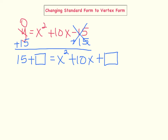We create the perfect square by taking the b value, which in this case is 10, and dividing it by 2. 10 divided by 2 is 5. So now we will square 5, and our perfect square will be 25. I'm going to put 25 in each square. Now I am ready to combine my like terms on the left side of the equation and factor the terms on the right side of my equation.